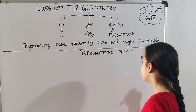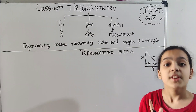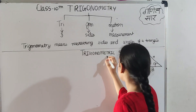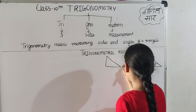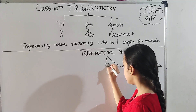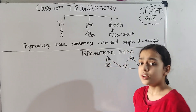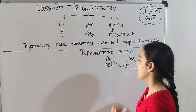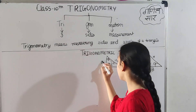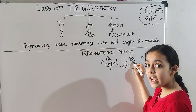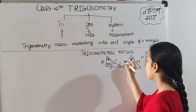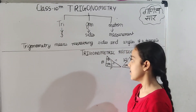You might think, how do I recognize which side is perpendicular, which is hypotenuse, and which is base? There is a method. I will draw two triangles. This is 90 degrees, this is theta. The side opposite to 90 degrees is the hypotenuse. The side opposite to theta is the perpendicular, and the remaining side is always the base.